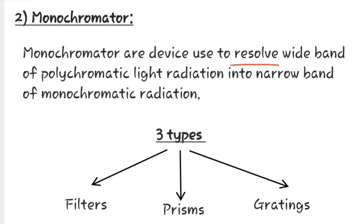Monochromators are devices used to resolve wide band of polychromatic radiation into narrow band of monochromatic radiation. There are three types of monochromators: filters, prisms, and gratings.